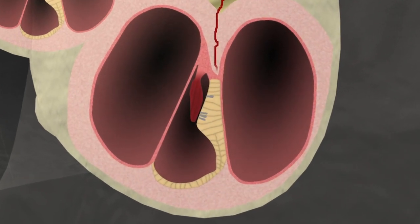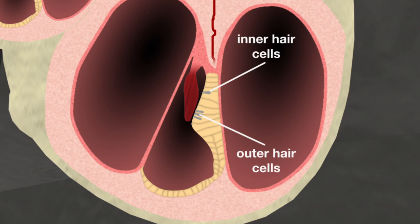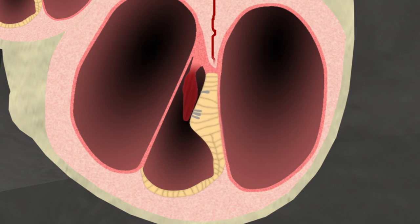Along the basilar membrane are two types of sensory cells or hair cells called the outer and inner hair cells. These are arranged in rows according to the frequency or pitch of sound they detect and covered by the tectorial membrane. Each hair cell has tiny hair-like projections called stereocilia attached to them.